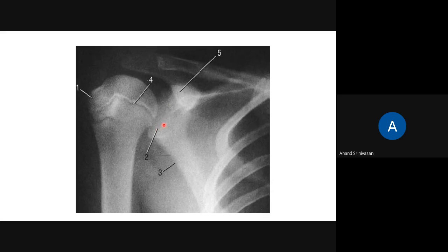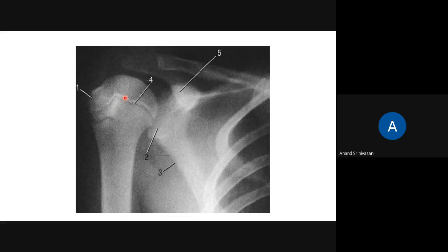The lateral end of the scapula has got a fossa - what is that? The glenoid fossa. The lateral border of the scapula. Number four - is this a fracture? No, this is an epiphyseal line, it's not a fracture. This is an epiphyseal line, that is the growing part - the epiphyseal region of the bone.